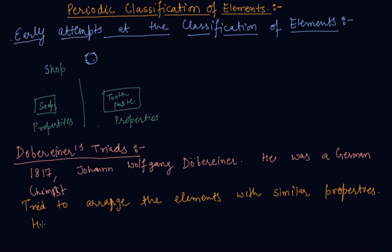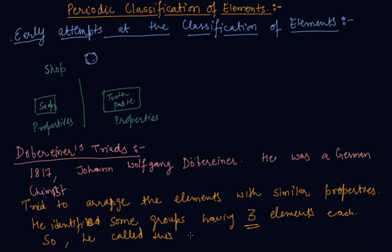He identified three groups mainly, some groups having three elements each. That is why he called this as triads because they are in the group of three.